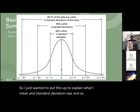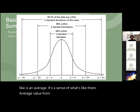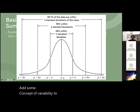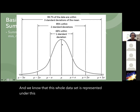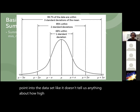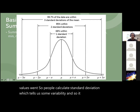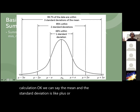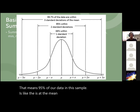The mean is an average — the central value from a dataset. Standard deviation adds some concept of variability, because the mean is just one point and doesn't tell us how high or low values went. If the mean and standard deviation is plus or minus two, that means 95% of our data is at the mean, or two units above or below the mean. It's a really common way to represent a dataset pretty quickly. You can also calculate standard errors and 95% confidence intervals — those are inferential estimates rather than descriptive statistics.